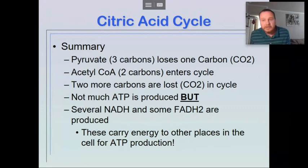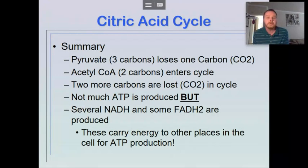Citric acid cycle summary: occurs in the mitochondria. Two pyruvates come in with three carbons each. They have to lose a carbon to enter the cycle.